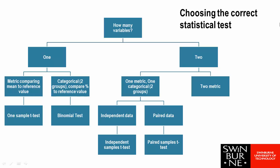If we have two metric variables and we are examining the relationship between the two metric variables, we will use correlation and regression.